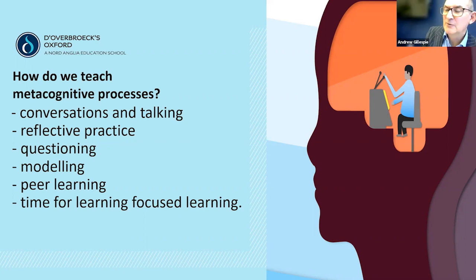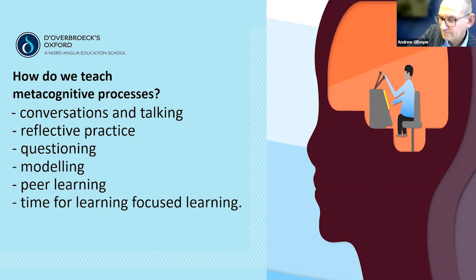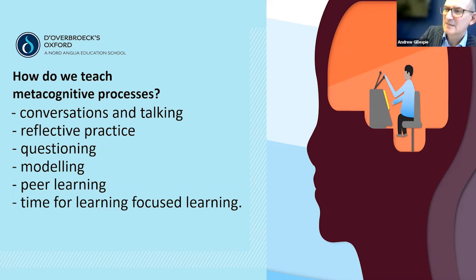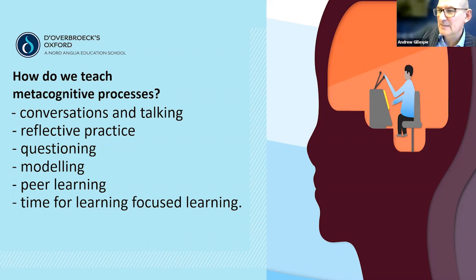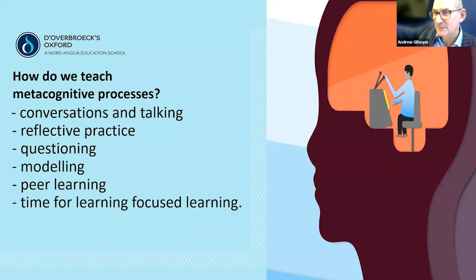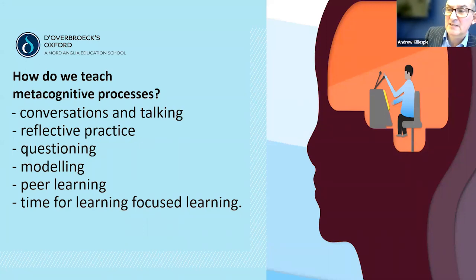Modeling is very powerful. Peer learning as well — students sharing not just work. A school that doesn't get students to share work is in one place; a school that gets students to share work and compare outcomes is in another place; and a school that gets students to talk to each other about how they did something is in another, more meta place.